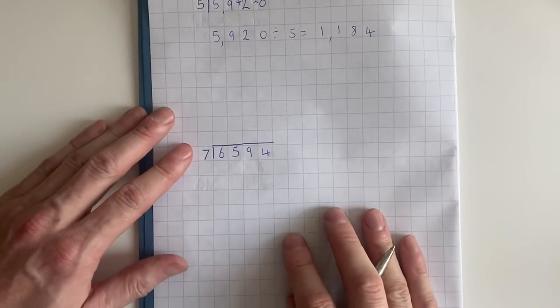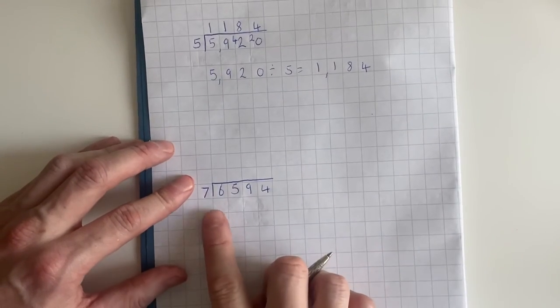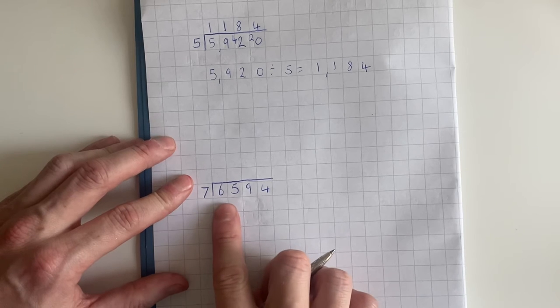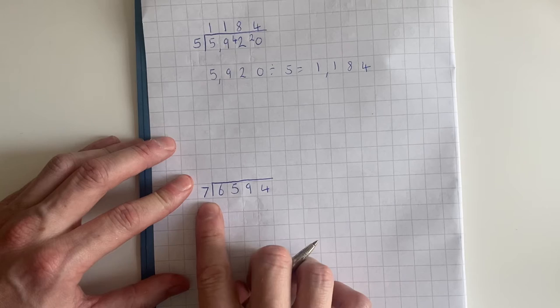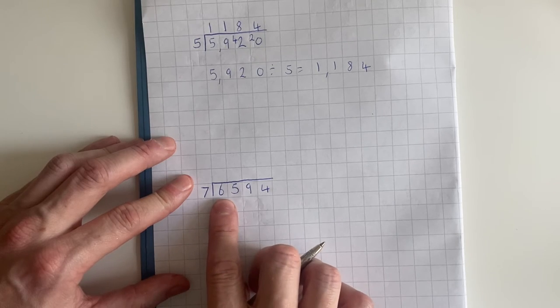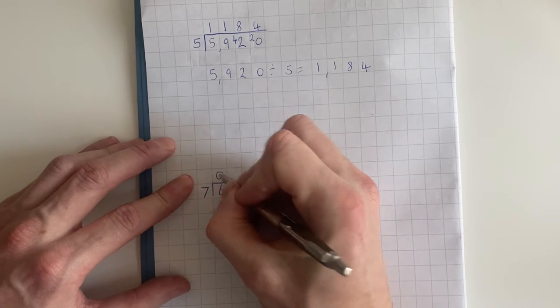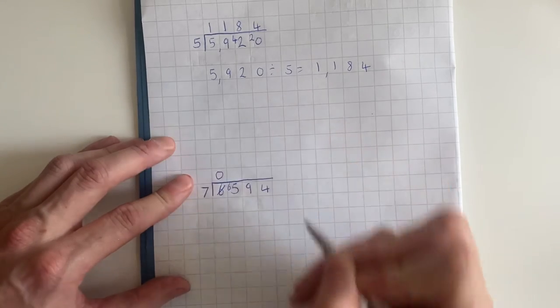Our second example, how many sevens go into six? So we're doing six thousand five hundred ninety four divided by seven. Well this number is greater than this number, so straight away we put a zero here and we put our six in front of our five.